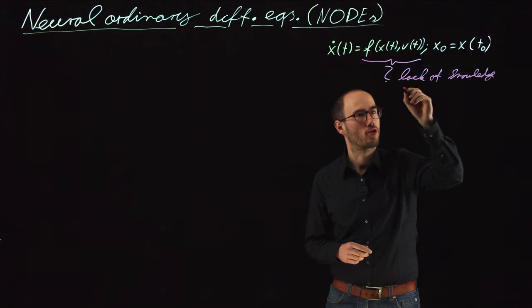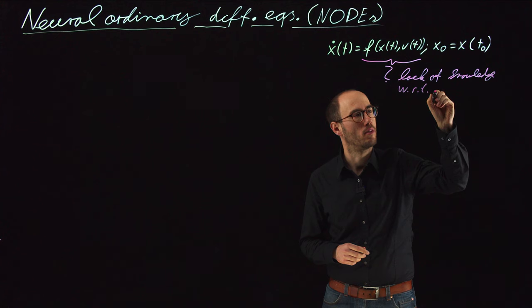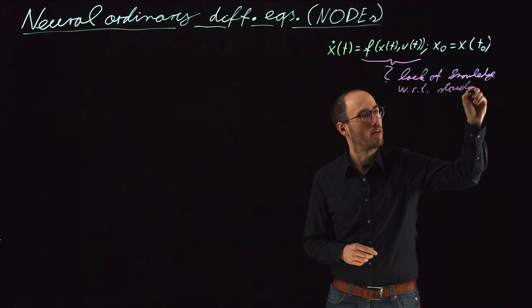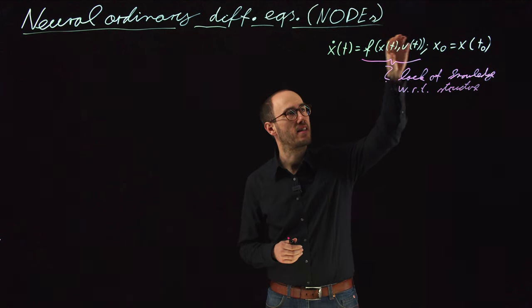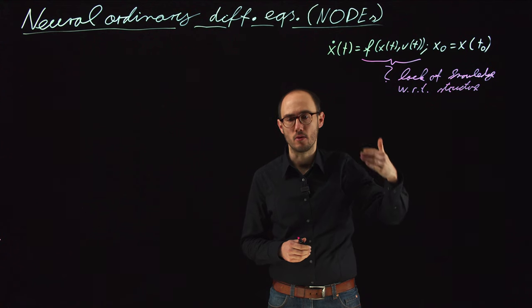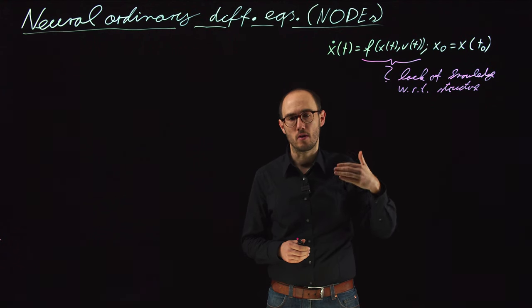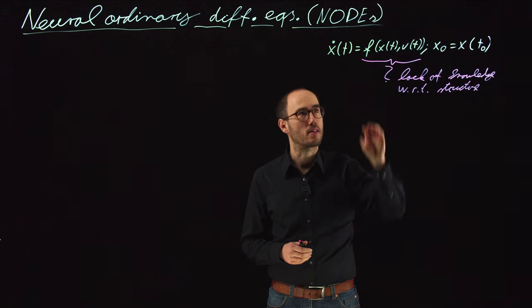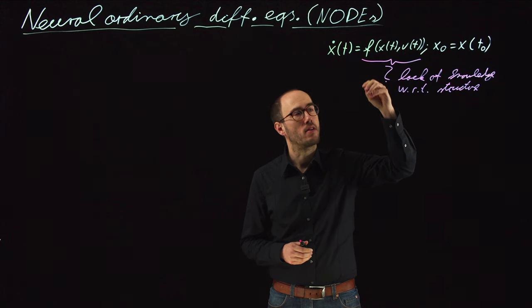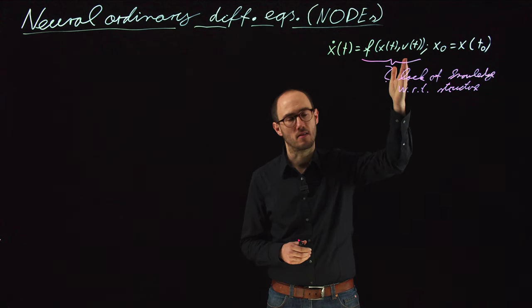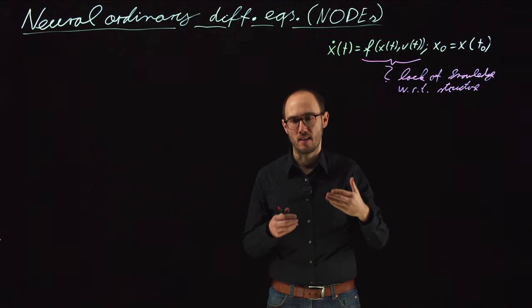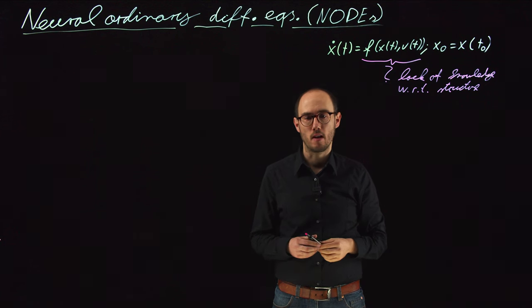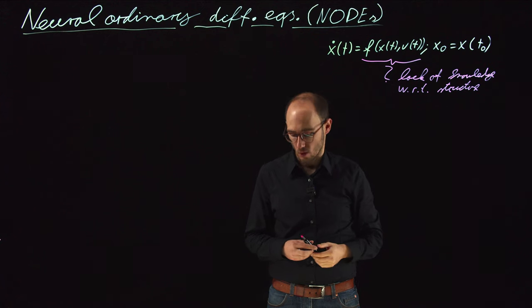We lack knowledge with respect to structure. If we do not have specific insights into how the right-hand side of the ODE is internally structured, we normally also do not have the opportunity to model physical or interpretable parameters within that right-hand side. So we need not only to find some parameters describing the right-hand side, but we also need to find the actual structure to represent it. One way to do this is the so-called NODE approach.